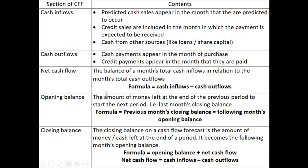Once we have those totals, we can calculate the net cash flow. The net cash flow is simply cash inflows minus cash outflows. If we have more cash flowing out than flowing in, that will produce a negative number. In that case, we express that number in brackets — I'll show you an example in a moment.